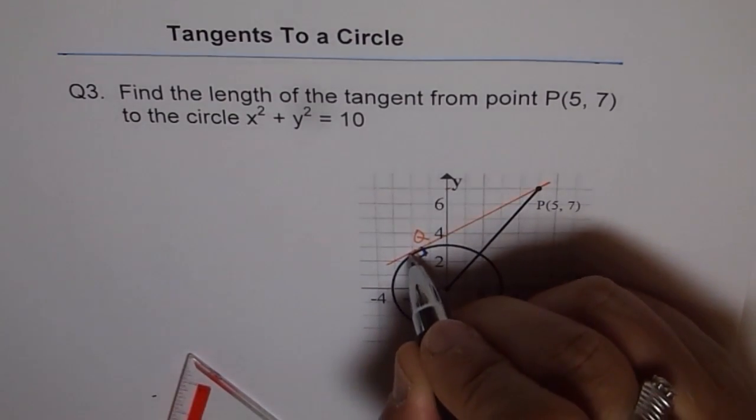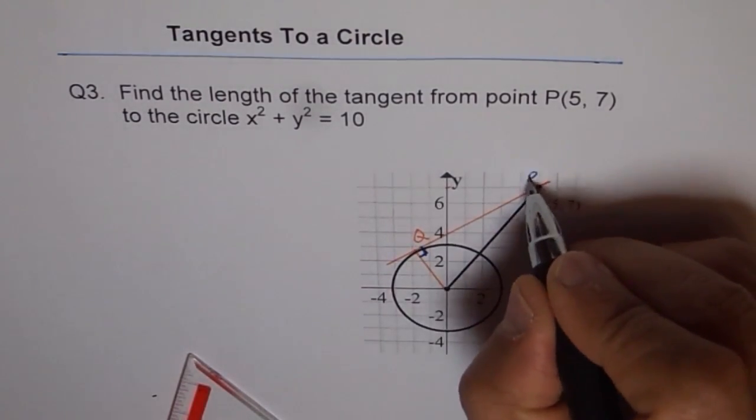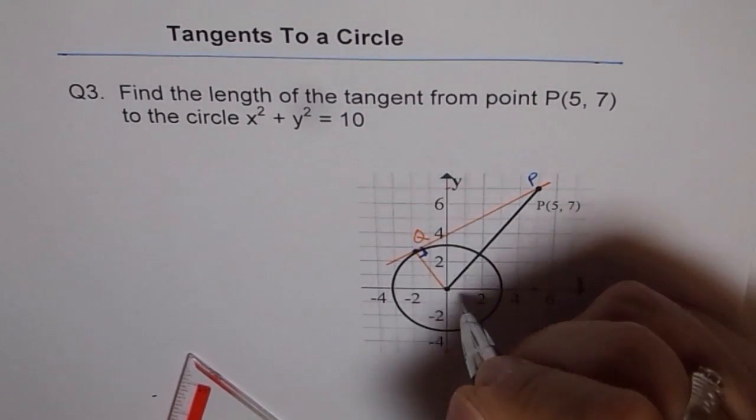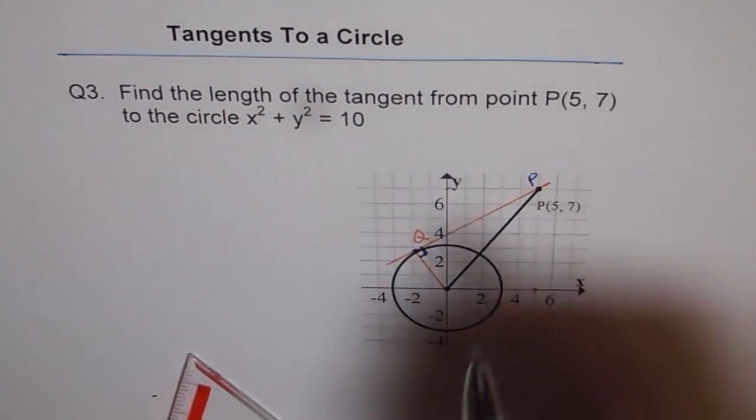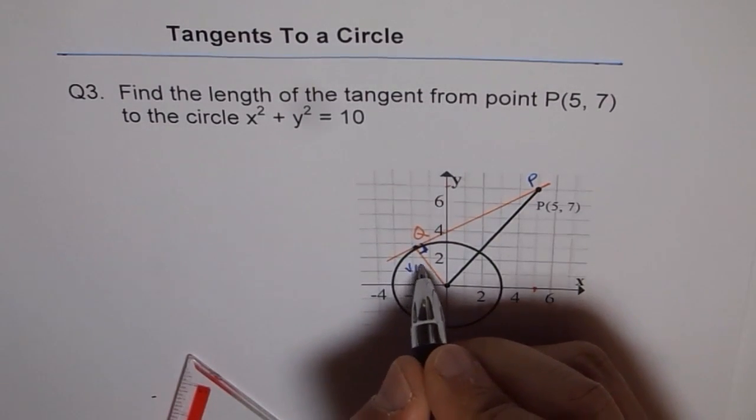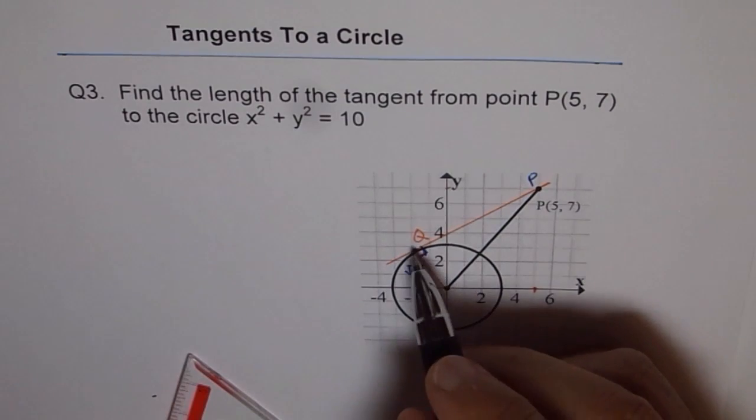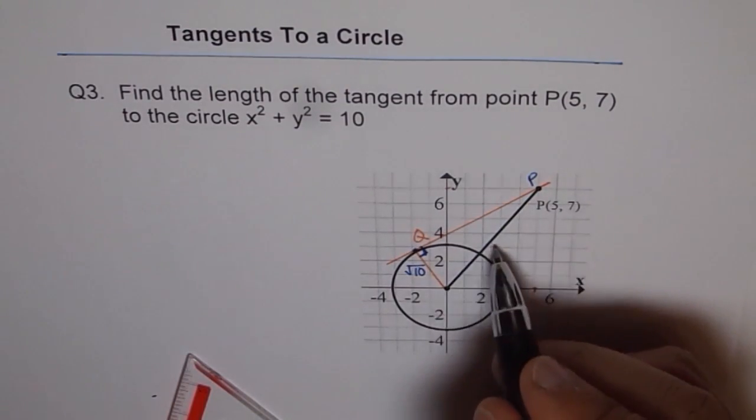Now we need to find the length of this QP. So that is the length which we are interested in finding from Q to P. We already know the radius of the circle which is square root of 10. So let me write down here, square root of 10. That is the radius of the circle. Now with one side given, two sides unknown, we can't do it.